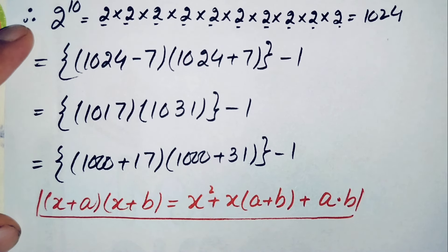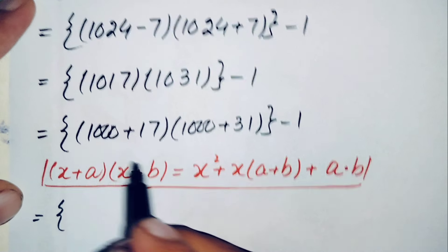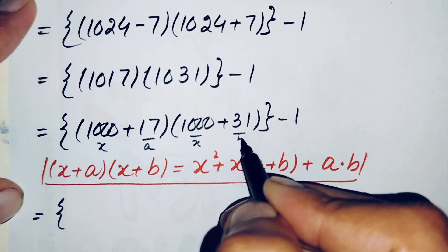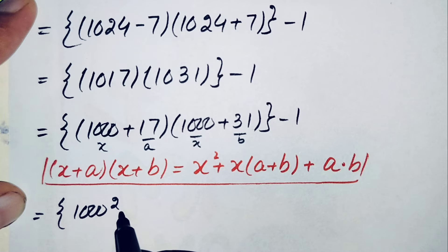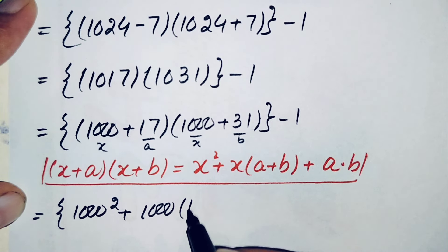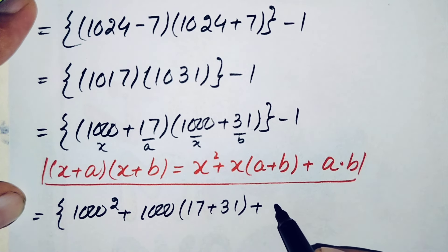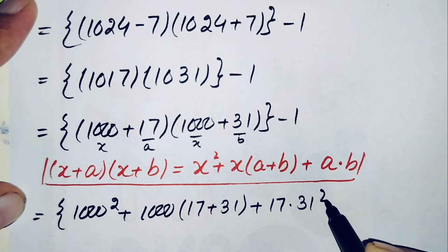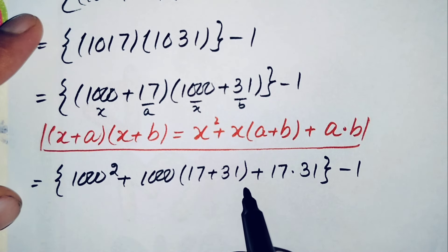Using this expansion, x is 1000, a is 17, and b is 31. So we get: x squared which is 1000 squared, plus x times a plus b which is 1000 times 17 plus 31, plus a times b which is 17 times 31, minus 1.